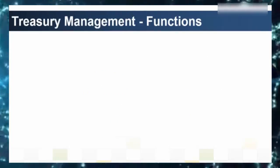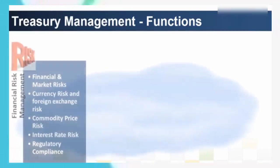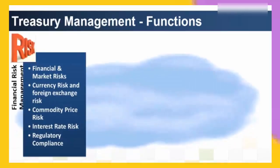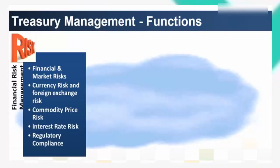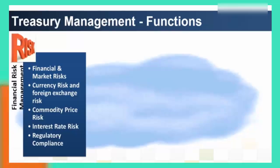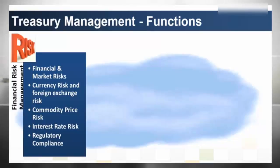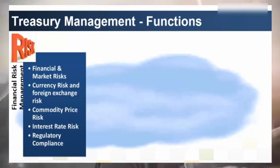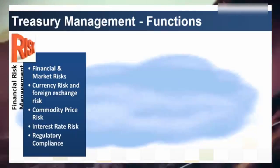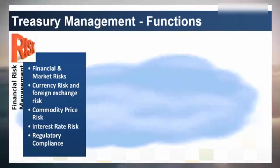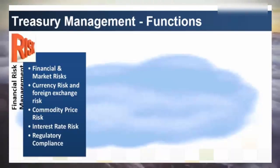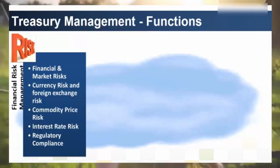Treasury management has become a specialized function and today's treasuries are expected to perform the following critical functions. Financial risk management is aimed at significantly reducing financial risks, which includes currency risk management, commodity price risk management, interest rate risk management and other market risks. This is necessary to keep business margins insulated from market volatility, and is aimed at planning, controlling and monitoring the market risk a company is exposed to.